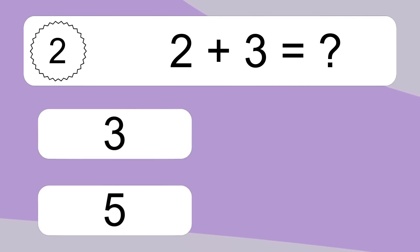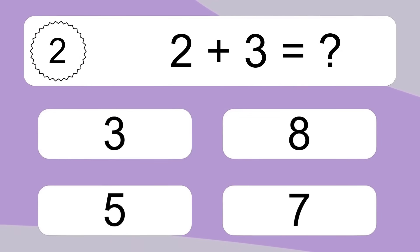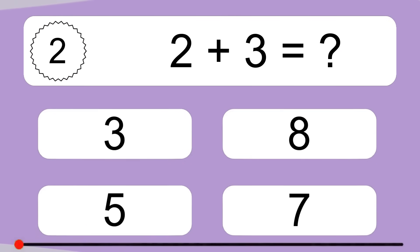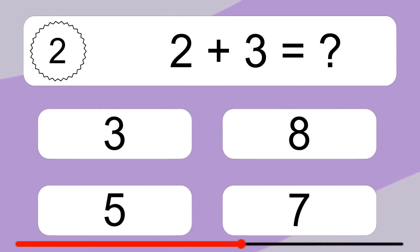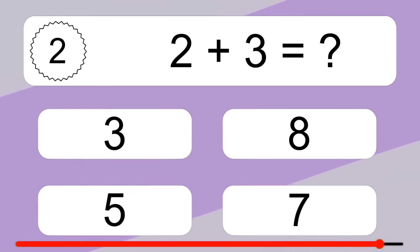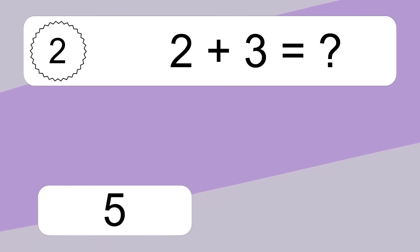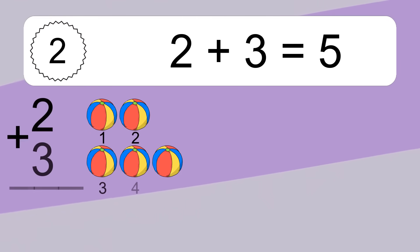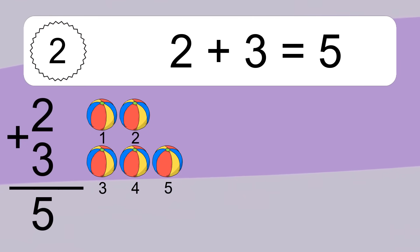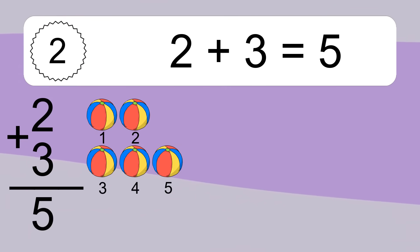2 plus 3 equals what? 2 plus 3 equals 5. Let's count it: 1, 2, 3, 4, 5.